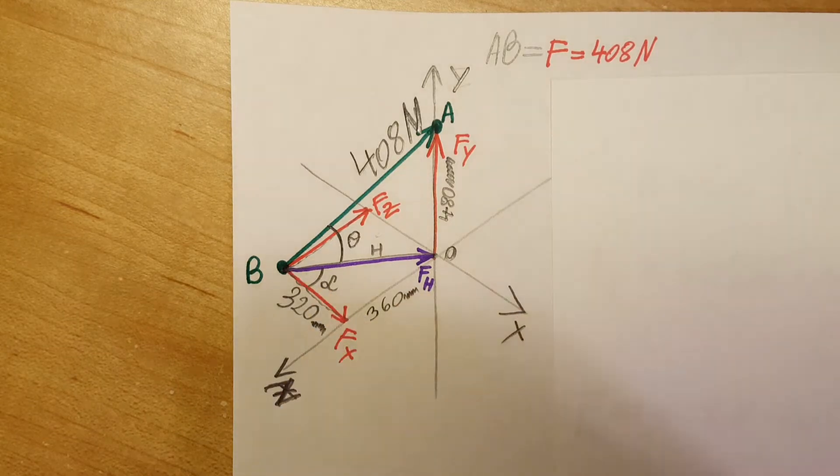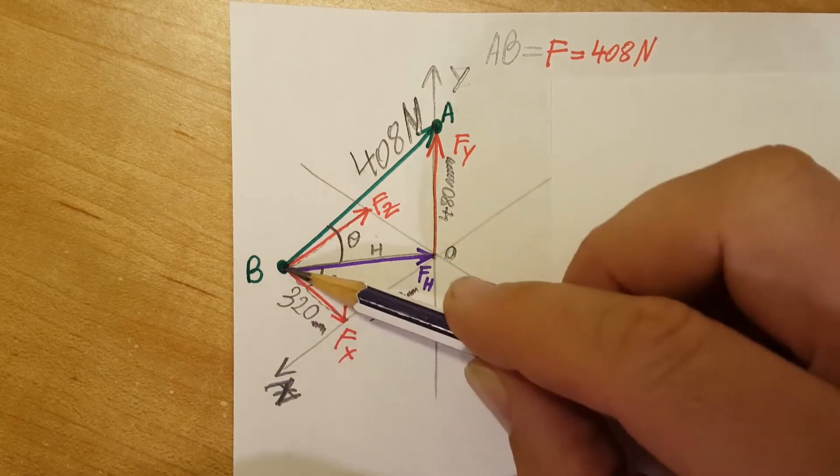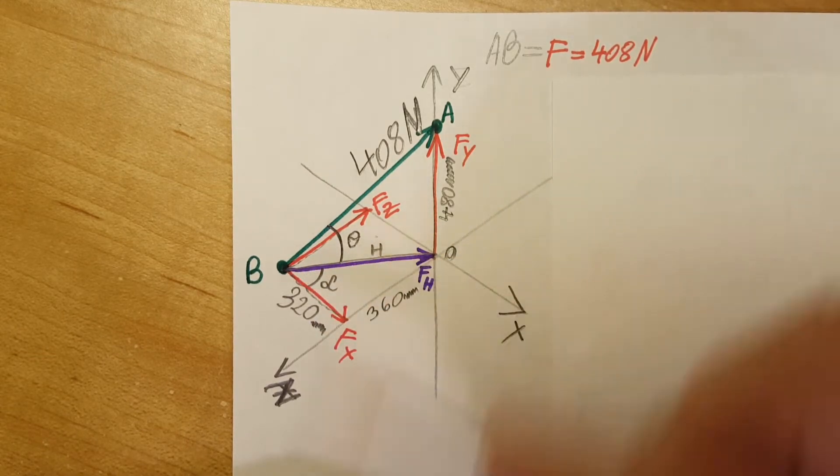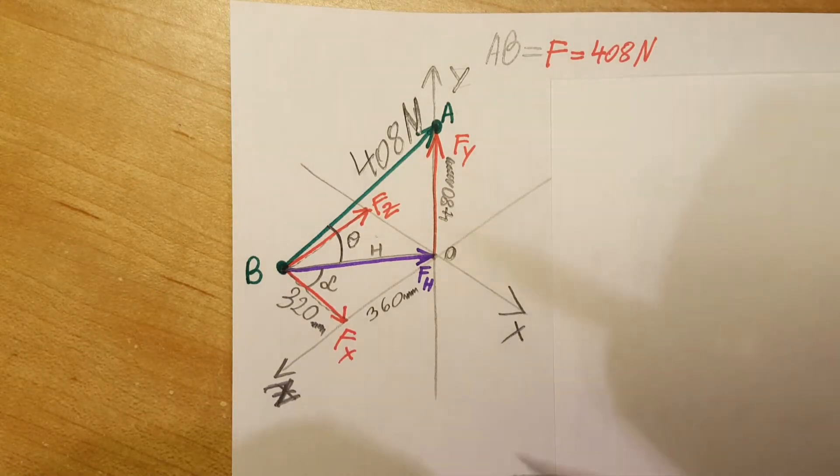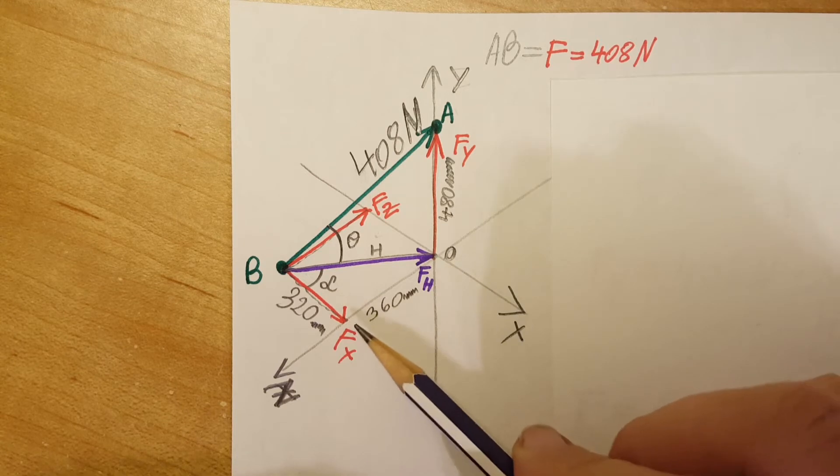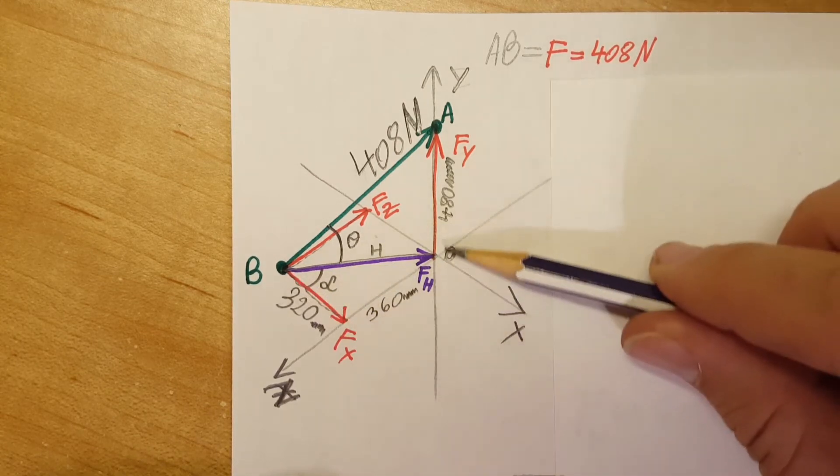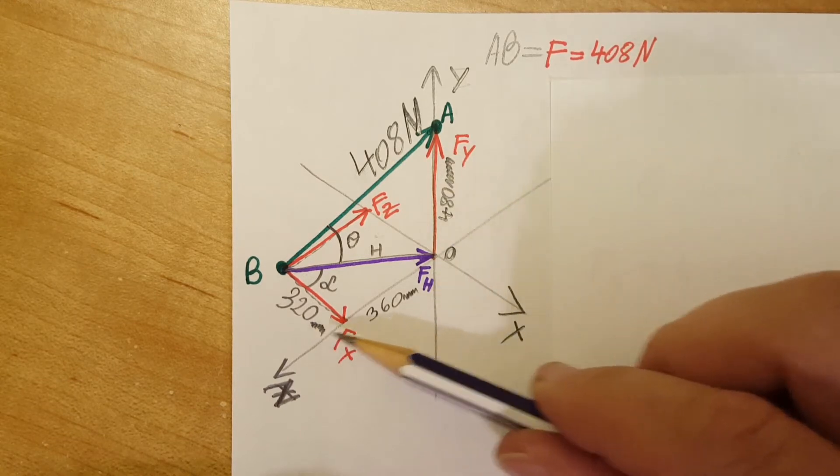First, let's take a look at what values we are given. We know this, we know this, and we know this distance. These are distances in millimeters.